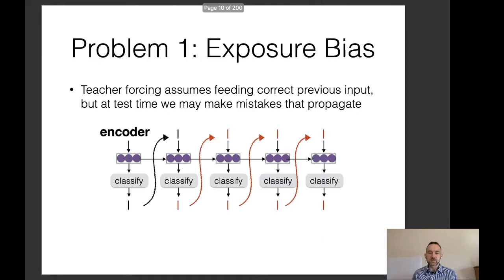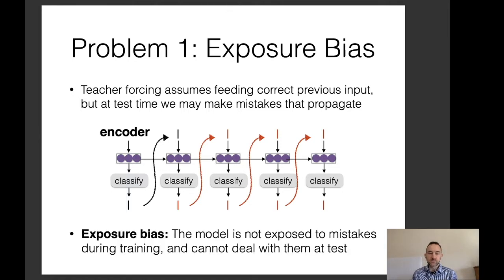Structured prediction becomes difficult for a number of reasons. One reason is exposure bias: in normal maximum likelihood training or teacher forcing with encoder-decoder models, we assume we're feeding in the correct previous input, but at test time we may make mistakes and these mistakes may propagate. For example, if we feed in the word 'I' and get it again, this may convince the model to repeat it endlessly, because it's never seen a mistaken repeat in training. The model is not exposed to mistakes during training and can't deal with them at test time.